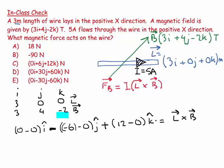But let's tidy this up a bit. 0i, minus minus makes plus, plus 6j plus 12k. And that equals L cross B.